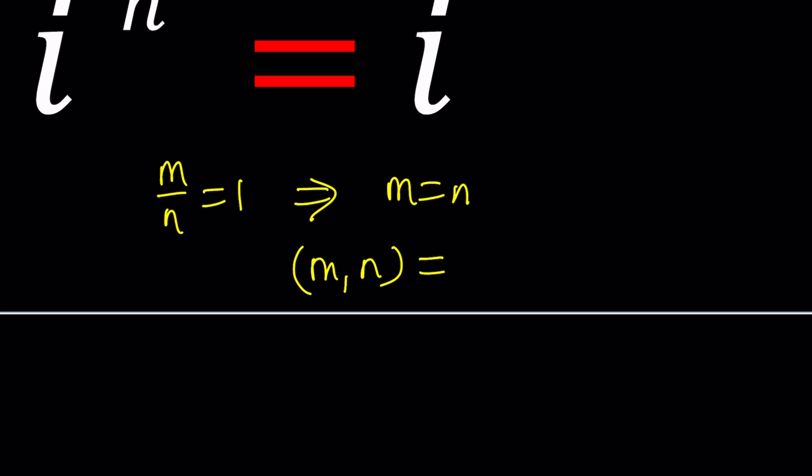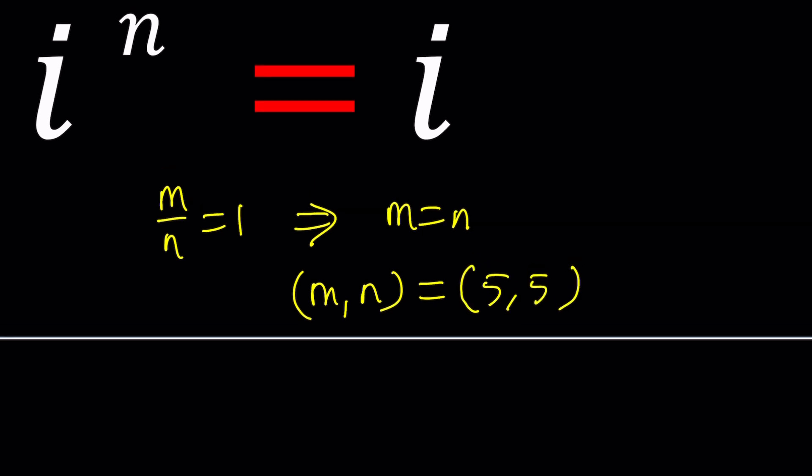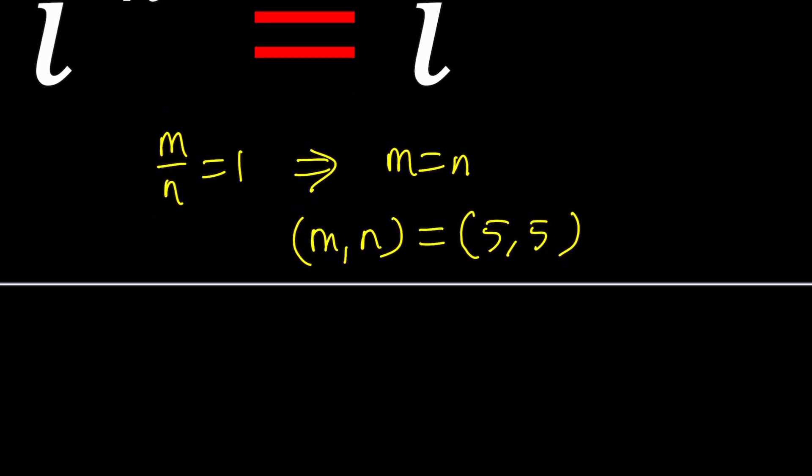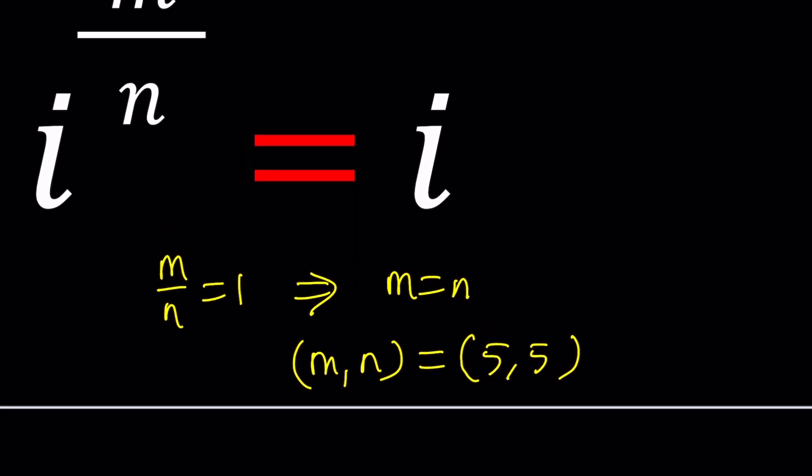This could be something like five comma five, or a million comma a million. What about zero? Zero over zero is undefined or indeterminate.